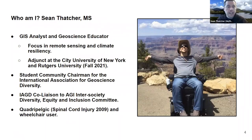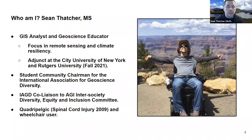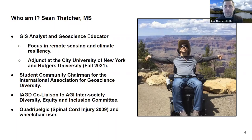My name is Sean Thatcher. I'm a GIS analyst and geoscience educator focused mostly on remote sensing technologies and how they can be used to analyze coastal communities, especially regarding climate resiliency. I'll also be an adjunct at CUNY's College of Staten Island and Rutgers University. I'm chairman of the IAGD student community, where we help provide opportunities to students with and without disabilities to break down barriers of equal access in the geosciences. I am also a quadriplegic — I suffered a spinal cord injury in 2009 and am a wheelchair user.